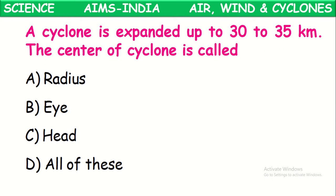A cyclone extends up to 30 to 35 kilometers. The center of the cyclone is called the eye of the cyclone, where the air pressure is very low and it is a calm area. The center part of the cyclone is called the eye of the cyclone.